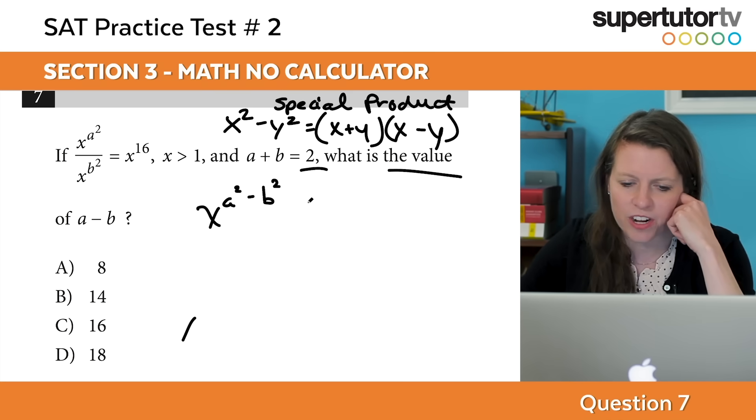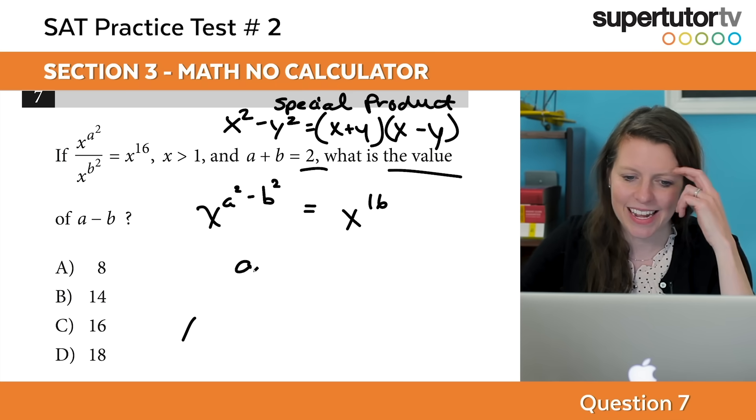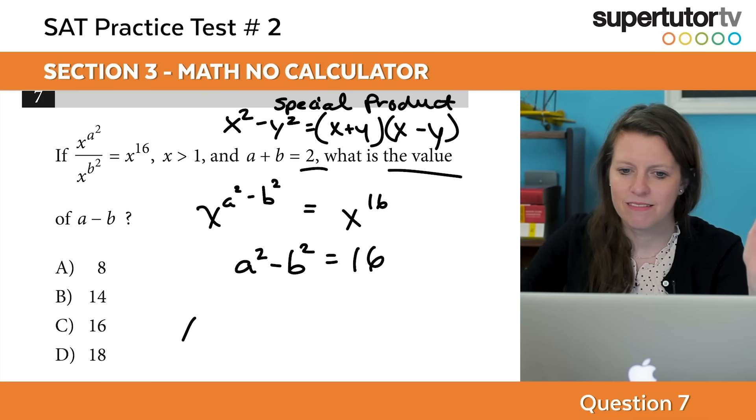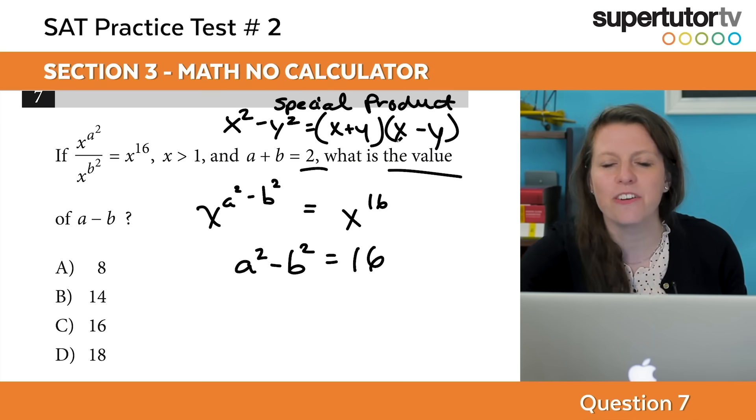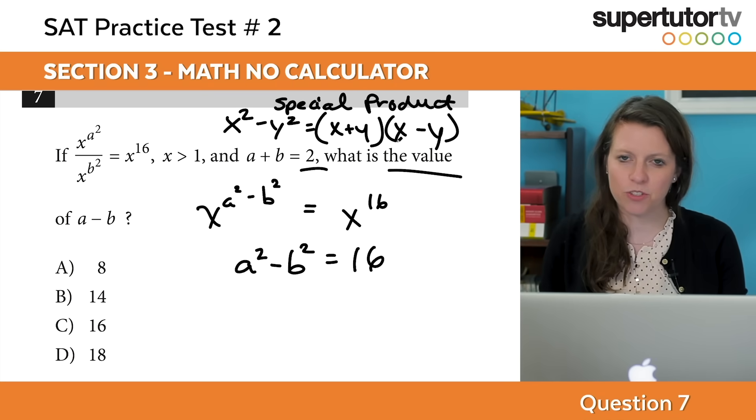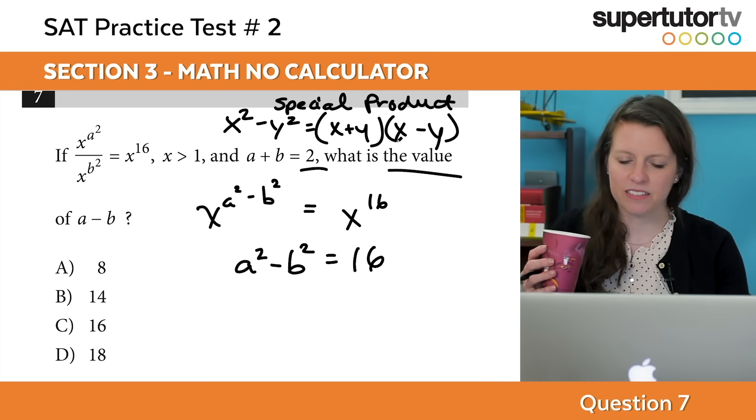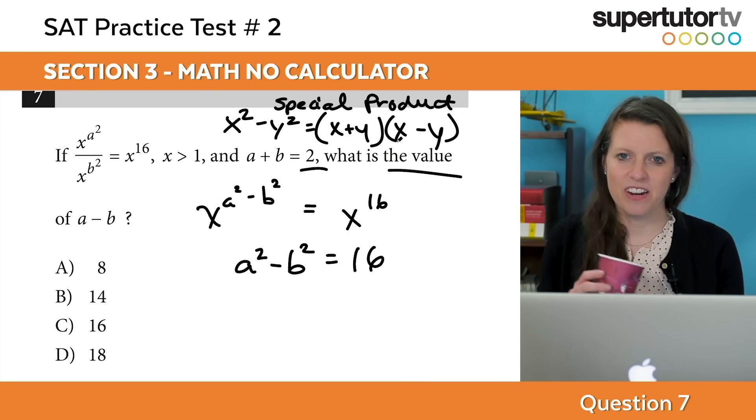If you know that rule you can simplify this right away. Then we get to do this nifty trick called dropping the bases. When I have x to the a minus b equals x to the sixteenth, I can drop my x's and I get a squared minus b squared equals 16. Now this is where my special product comes in. This is just a factoring pattern that you should have memorized. If you don't have it memorized, google special products or look at our course.